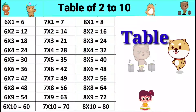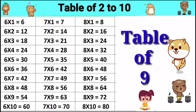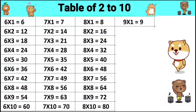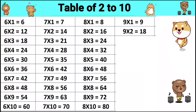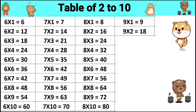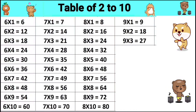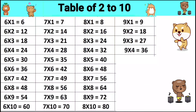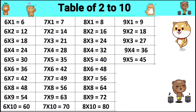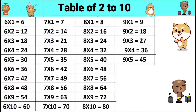Table of 9. 9 ones are 9, 9 twos are 18, 9 threes are 27, 9 fours are 36, 9 fives are 45.